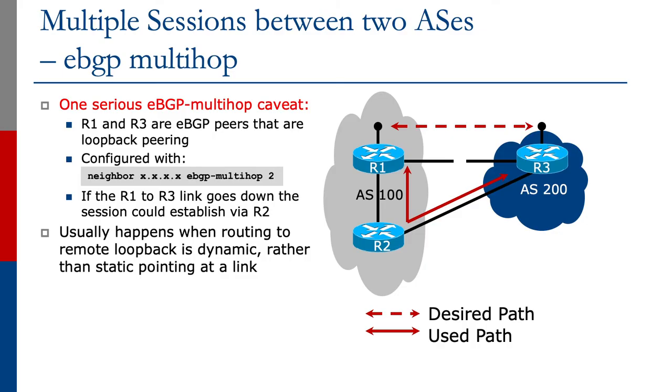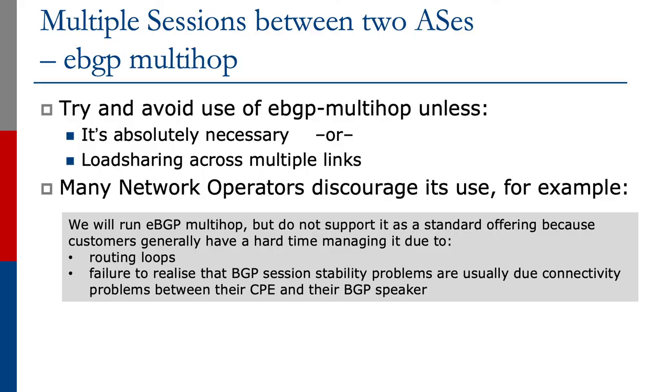This usually happens when routing to the remote loopback is dynamic rather than static, pointing at the link as mentioned earlier. I would advise to avoid using eBGP multi-hop if at all possible. The only conditions I would consider using it are when there's no other choice.